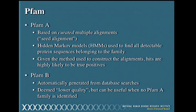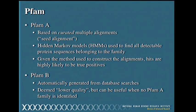There are two flavors of PFAM. PFAM-A is based on curated multiple alignments—somebody manually searched the database, made the multiple sequence alignment by hand, and used it with hidden Markov models to find all other sequences belonging to the family. They draw the analogy to a handcrafted beer. Because of the care given to constructing these, when you have a hit, the hits are very likely to be true positives. PFAM-B, by contrast, is automatically generated from database searches—deemed lower quality due to the lack of manual inspection, but worth checking if PFAM-A finds nothing.